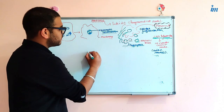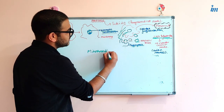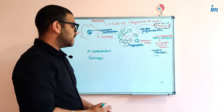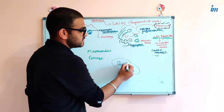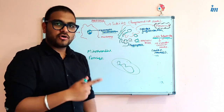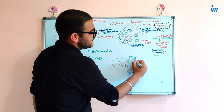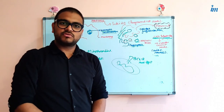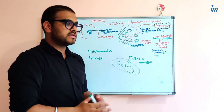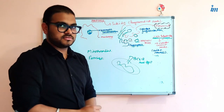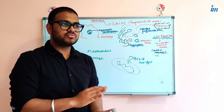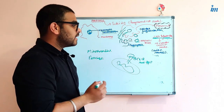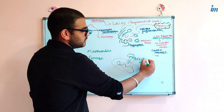Now let's look at the pathways responsible for apoptosis. There are two pathways: the mitochondrial pathway and the extrinsic pathway. In the mitochondrial pathway, on the outer membrane of the mitochondria there is a special protein called BCL2. BCL2 is an anti-apoptotic protein — it is expressed in normal cells and is a pro-survival protein that prevents the cell from undergoing apoptosis. It is normally expressed in cells that are not undergoing apoptosis.